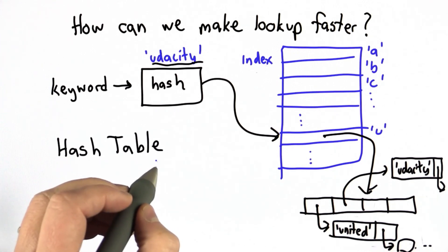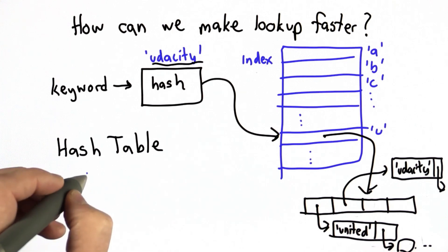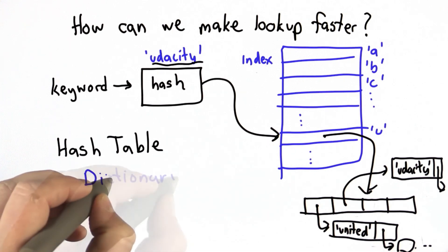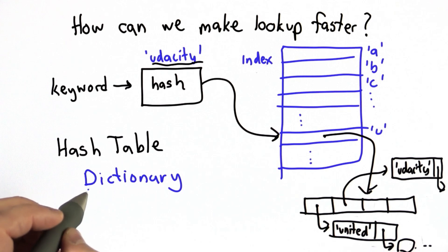This is a very useful data structure. It's so useful that it's built into Python. There's a Python type called a dictionary, which provides this functionality. At the end of today's unit, I'll explain how the Python dictionary works and how to use it. And we'll modify the search engine code to use dictionary instead of the lookup table that we built.